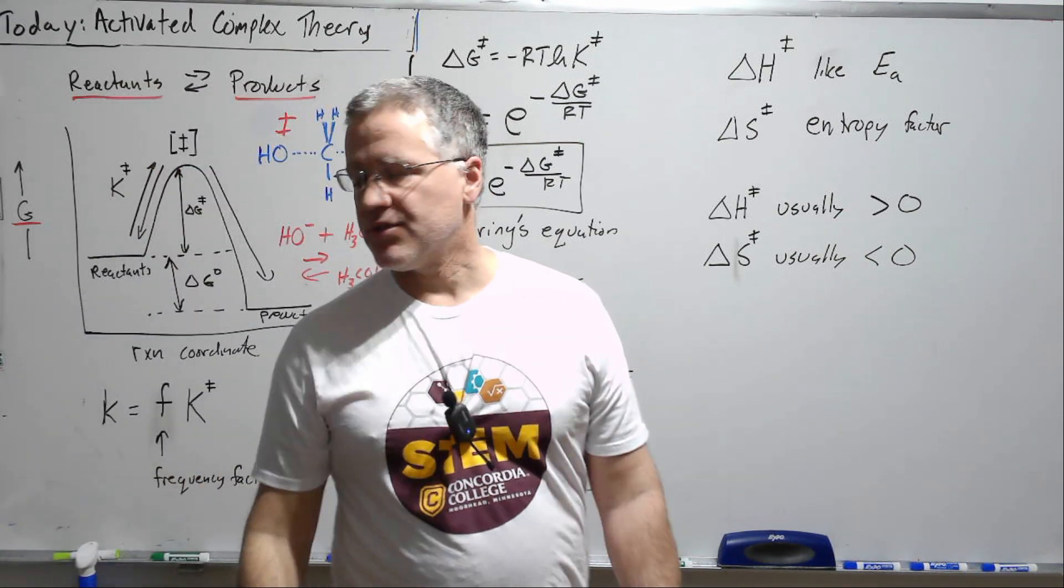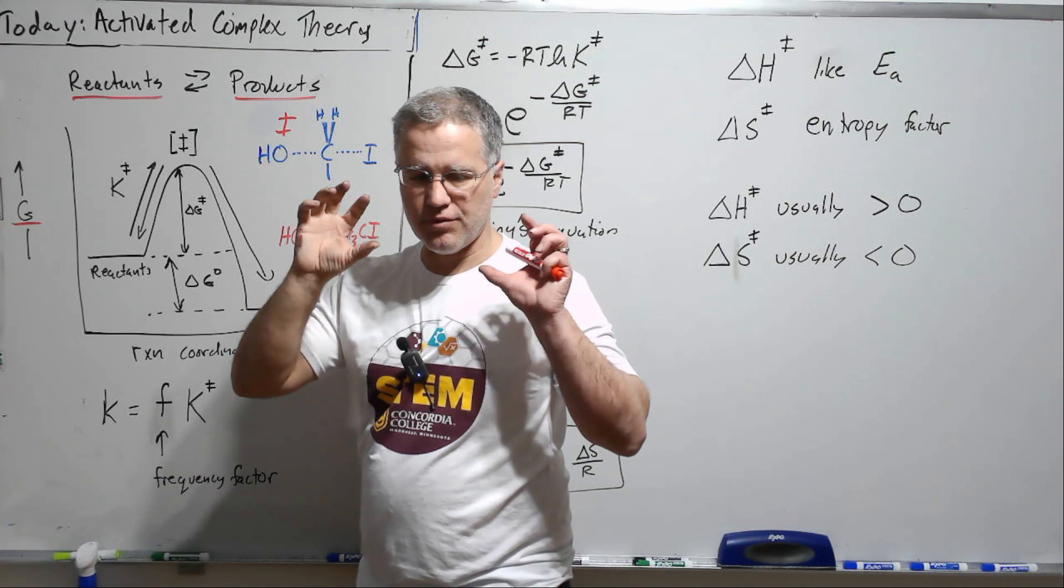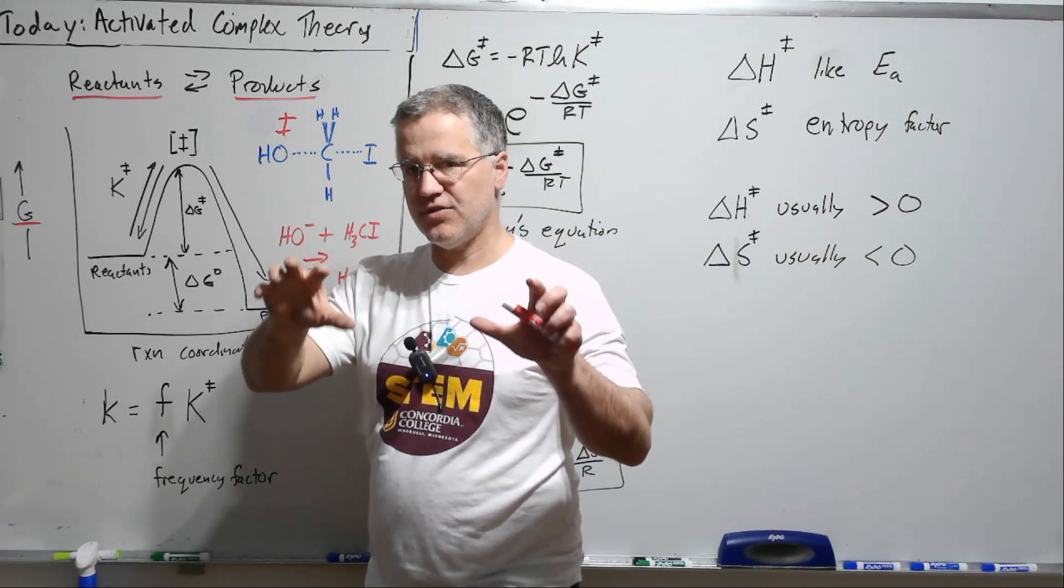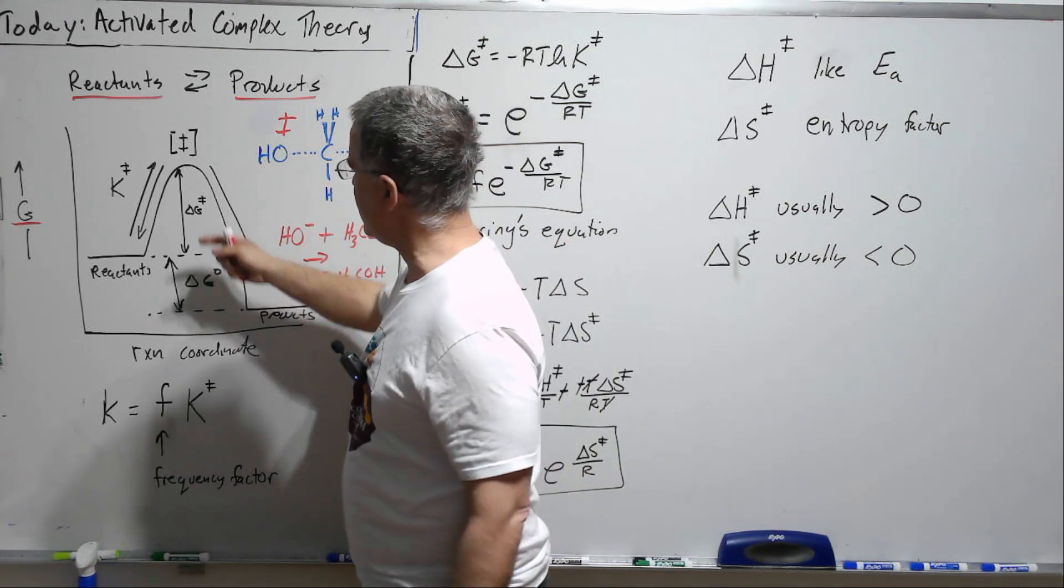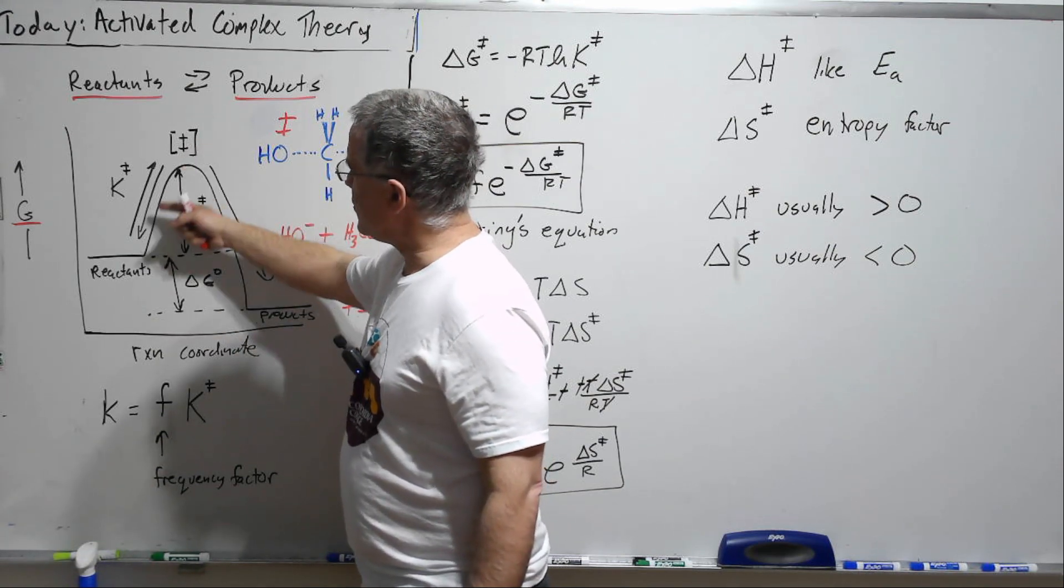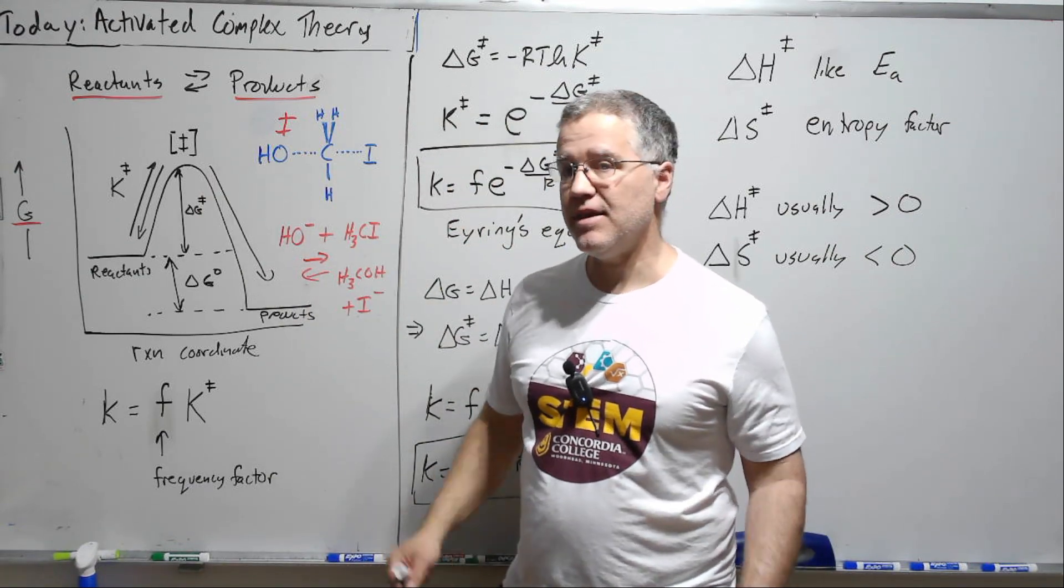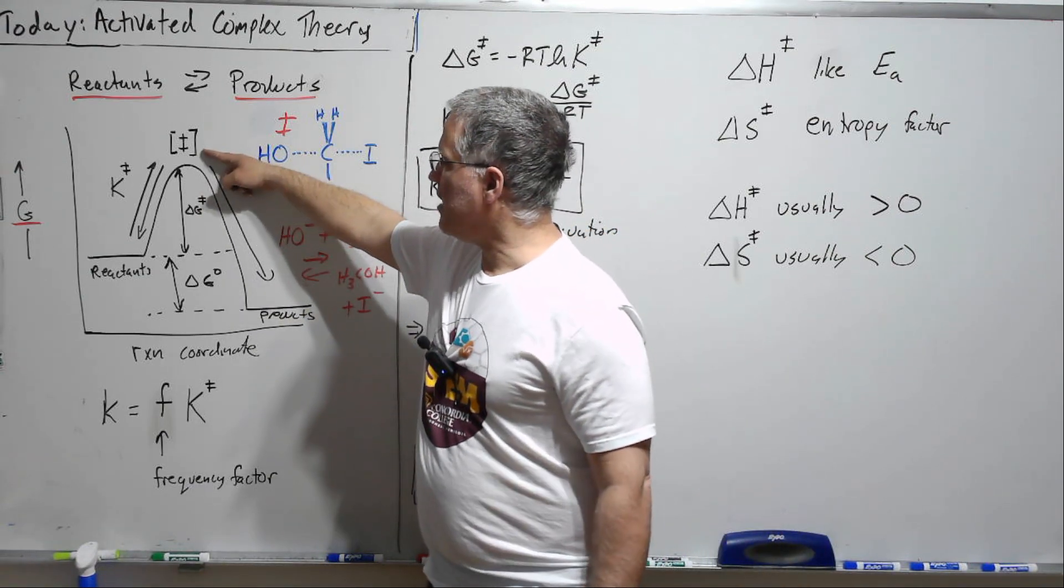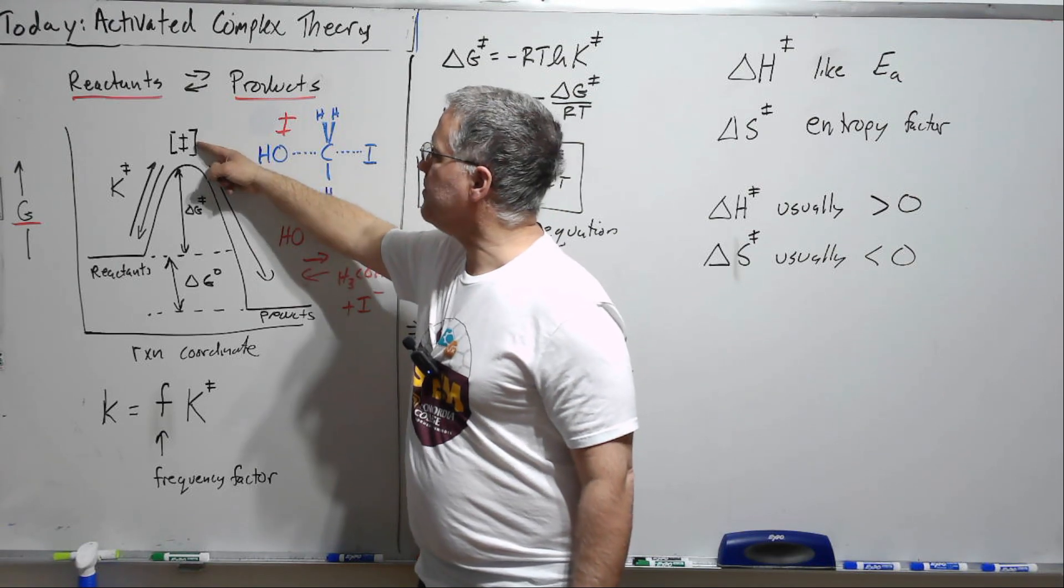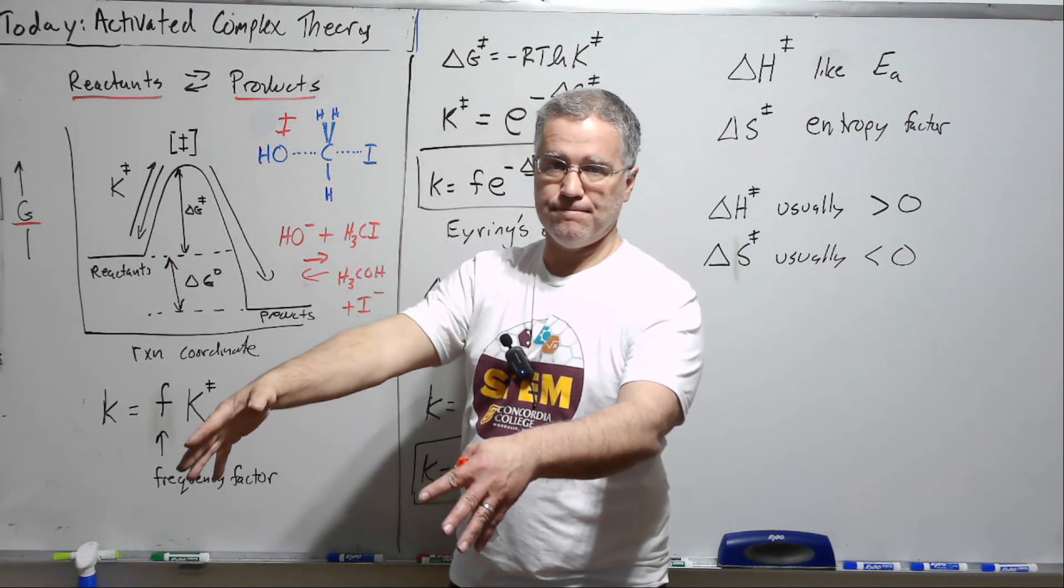And then what we're going to do is we're going to say that there is an equilibrium. Okay, so here's where we're forcing an idea that doesn't really belong but we're going to be able to make a little progress by doing so. We're going to say there's an equilibrium between the reactants and this activated complex. And then we're going to say once the activated complex, if the activated complex then goes this way it just goes all the way.